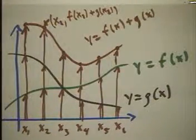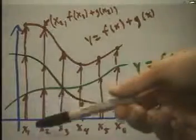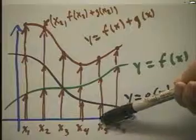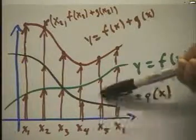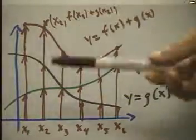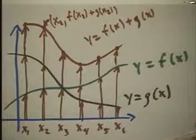If we want to add these functions, that means at every point on the x-axis, we add whatever the y value is for the g of x function to the y value of the f of x function, or vice versa. It doesn't matter in which order we add these, obviously.